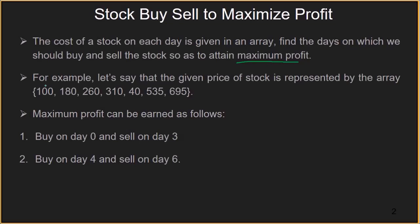For example, let's say the given array has the prices of stock as 100, 180, 260, 310, 40, 535, and 695. Here the price 100 is on day 0, 180 on day 1, 260 on day 2, and so on.